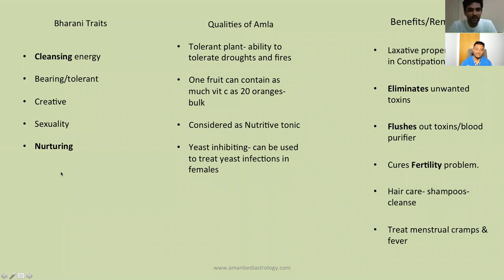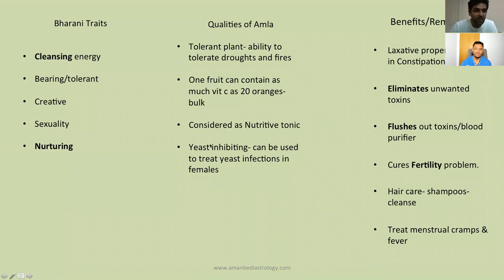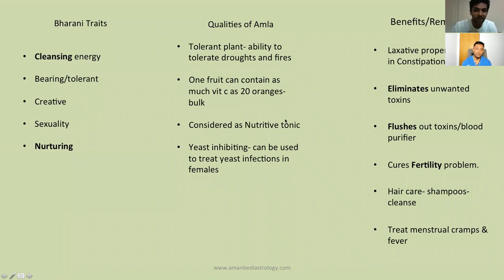The traits of Bharani — cleansing energy, bearing, tolerant, highly creative, sexual, nurturing — are matched with the qualities of amla. Amla is the most tolerant plant, with the ability to tolerate droughts and fires. You can see the bearing and tolerant energy of Bharani coming into the amla. The animal associated with Bharani is the elephant — big and bulky — and one amla fruit can contain vitamin C equivalent to 20 oranges.